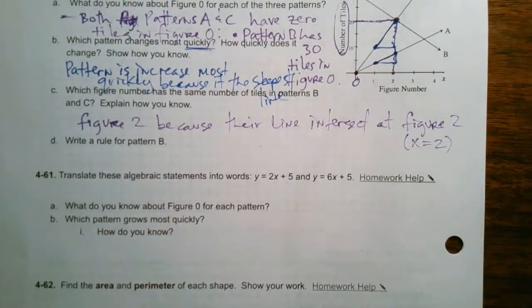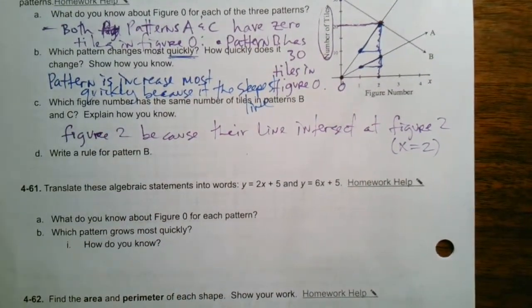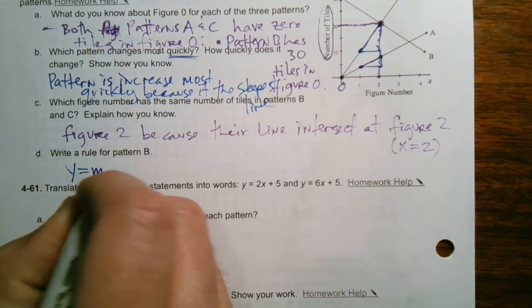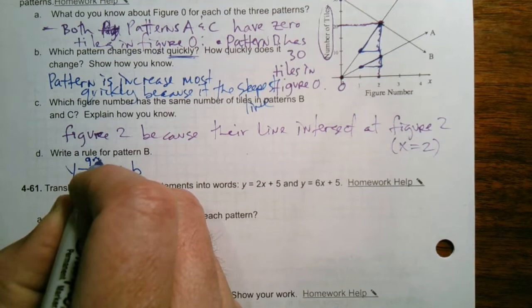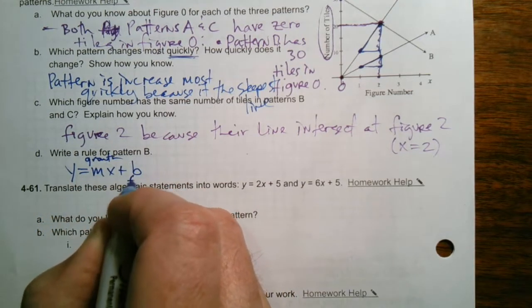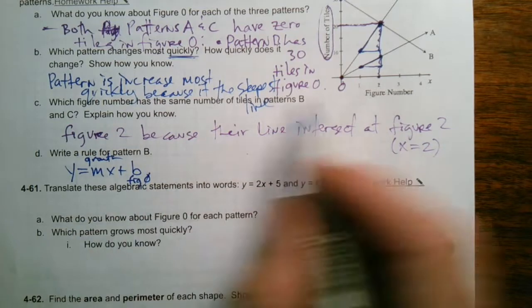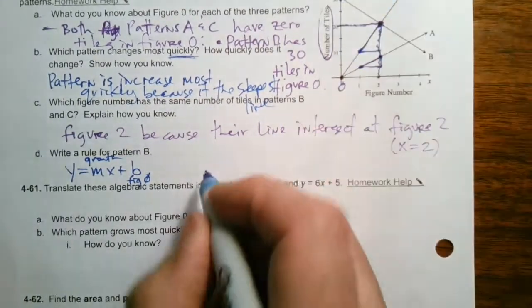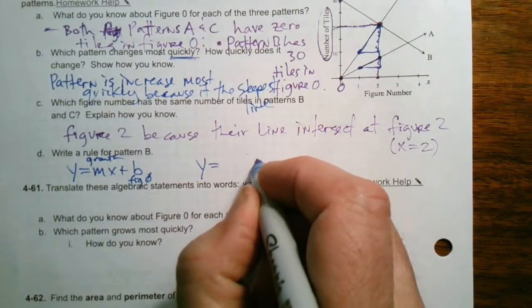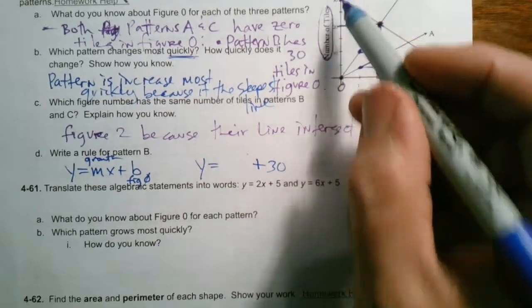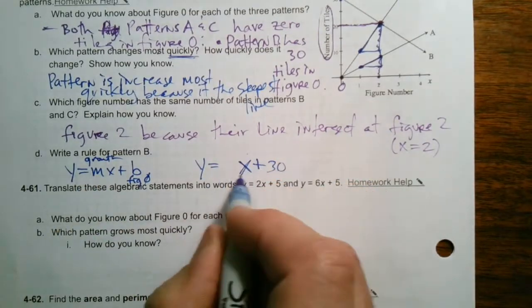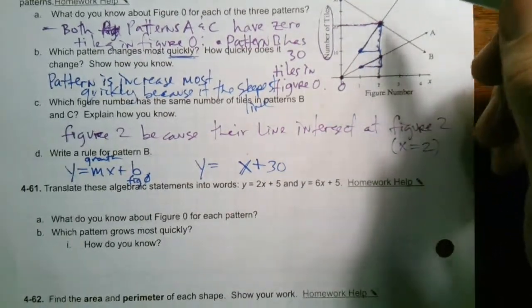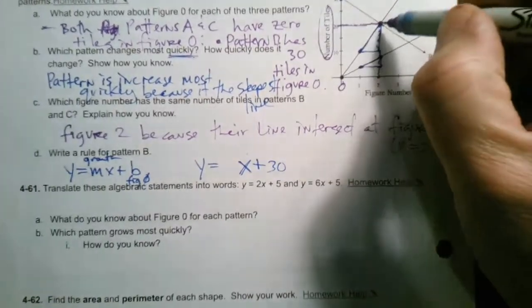And then last one, D says, write a rule for pattern B. So D wants us to write a rule for pattern B. And remember our rules, we know that Y equals M X plus B. M is always the growth. B is always the figure zero. So what is the rule then for pattern B? This one's pattern B. So I know it starts at 30. So my rule is going to be Y is equal to something going on with X plus 30 because it starts at 30. So now I just got to figure out what that M is. I know that there's going to be an M in front of the X and the M is the growth. So what is my growth from figure to figure?